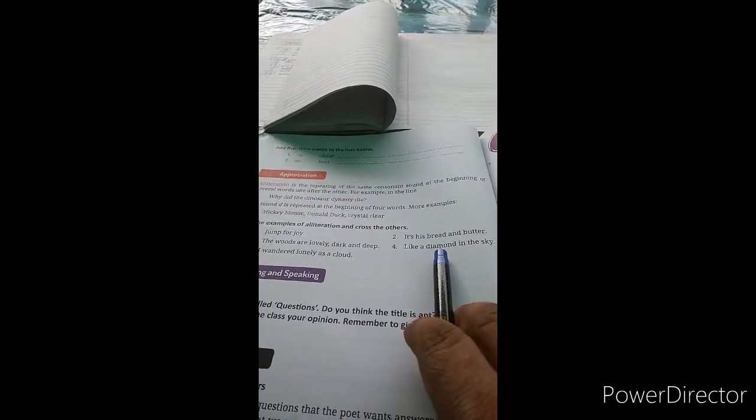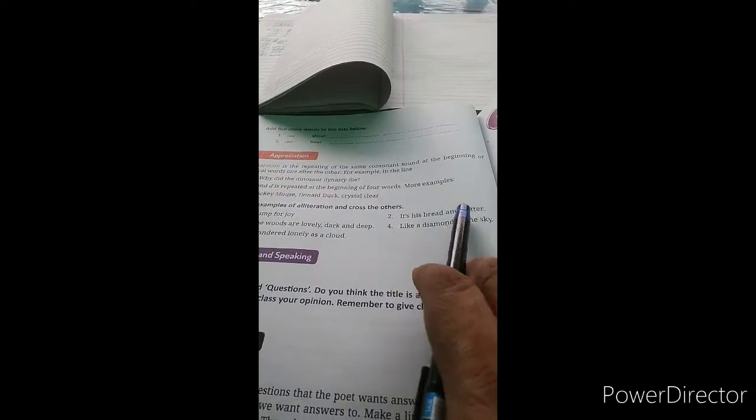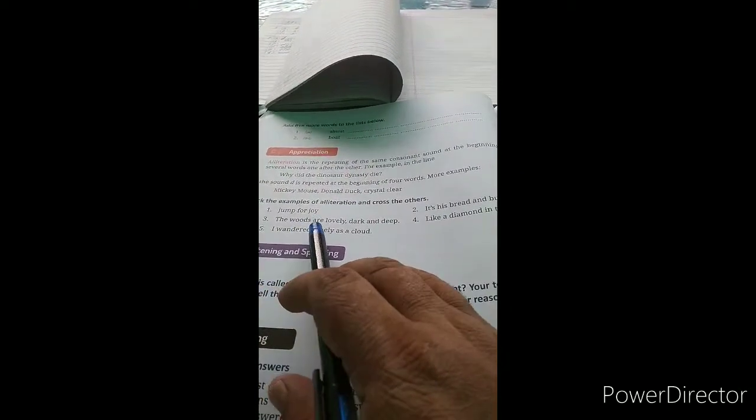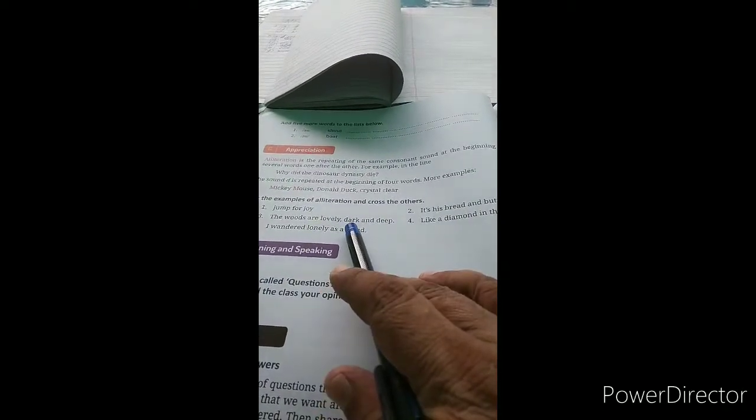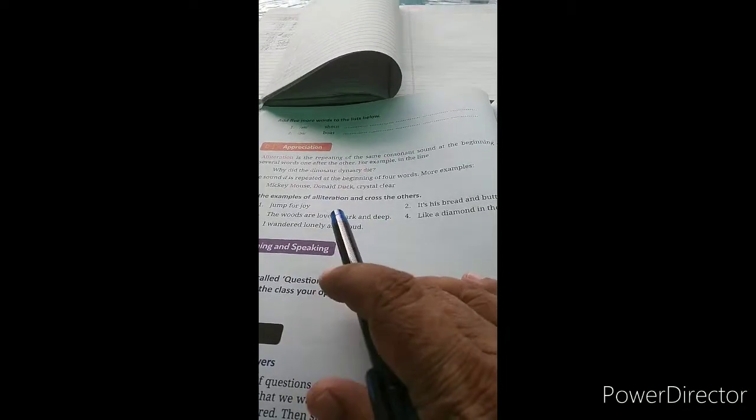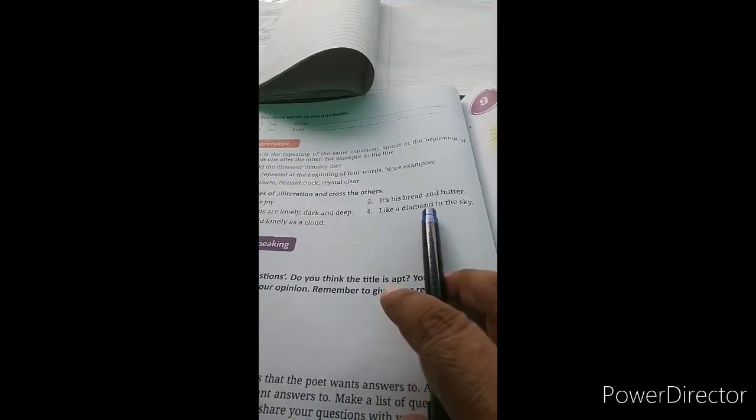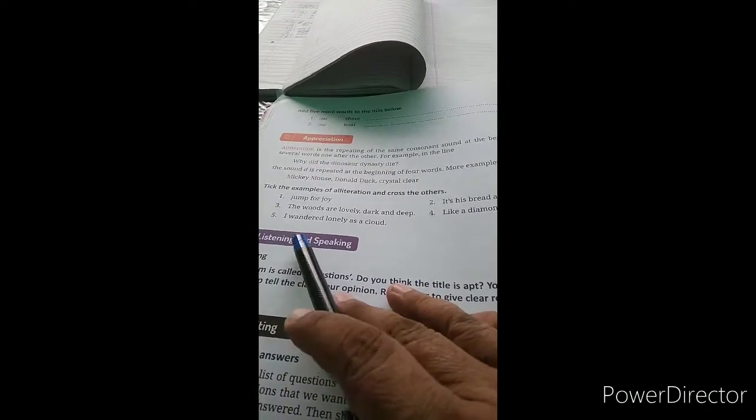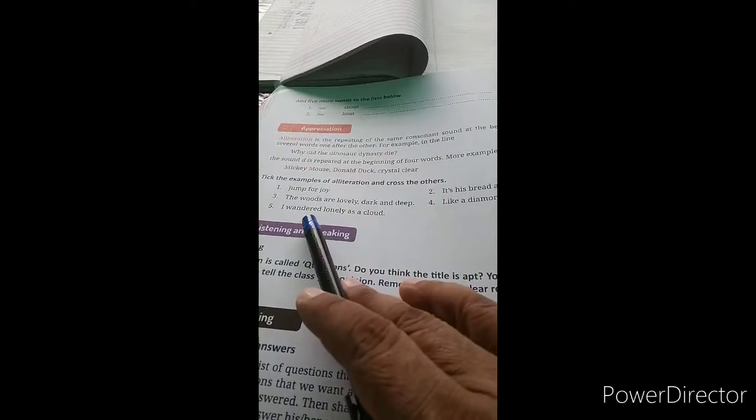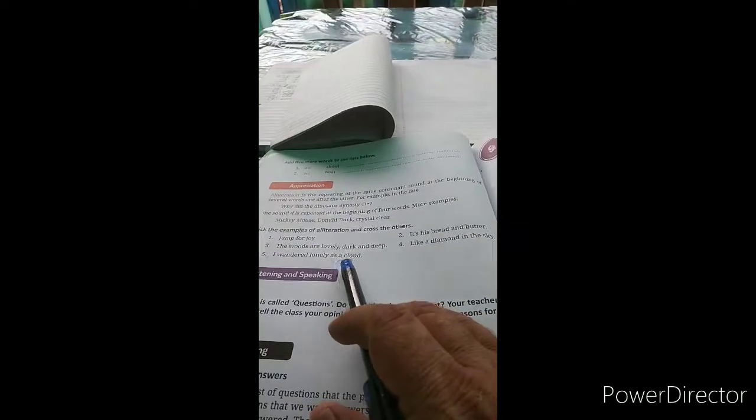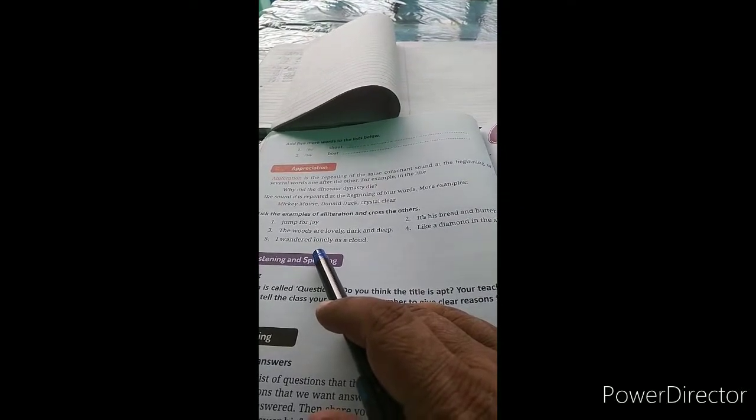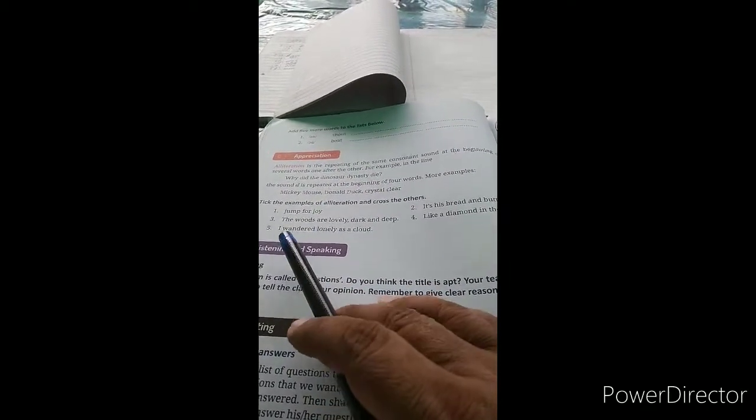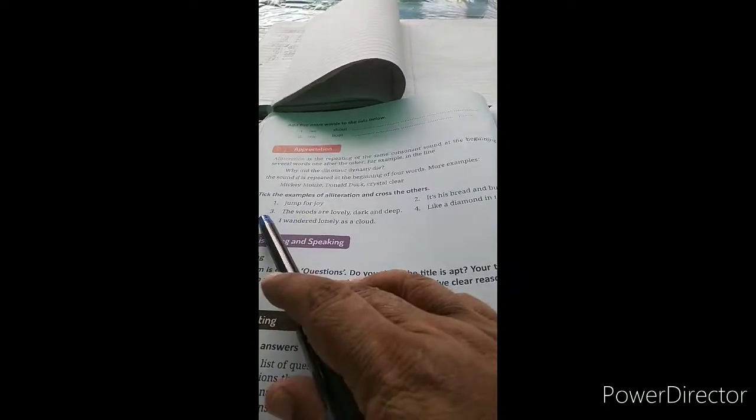Example three: 'the woods are lovely dark and deep' - dark and deep are alliteration. We will tick this. Example four: 'like a diamond in the sky' - no alliteration here, we will cross this. Example five also has no alliteration, no repetition of consonant sounds at the beginning of words, so we will cross this too.